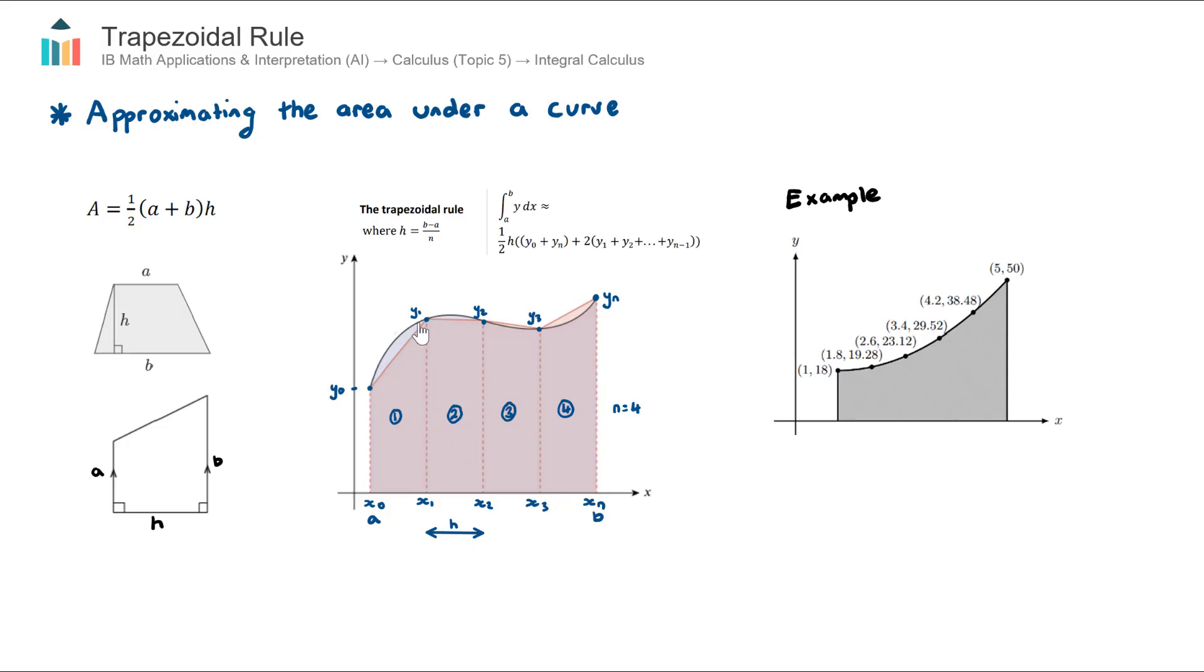But what if we didn't have the equation of this curve? Or what if the equation of this curve was very complex and we couldn't anti-differentiate it? Well this video is about how we can approximate the area by setting up a series of trapezoids, finding each of their areas, and if we added up all of their areas we would get a pretty good approximation of the area under the curve.